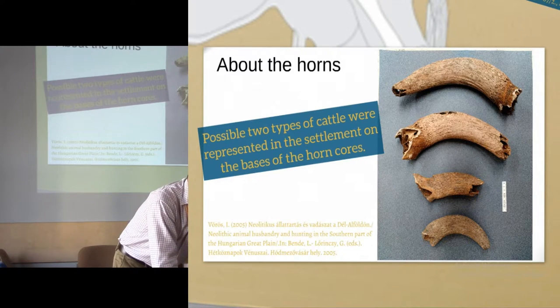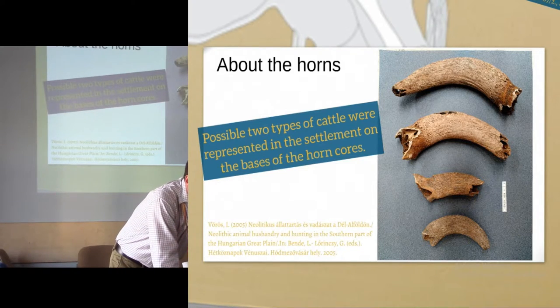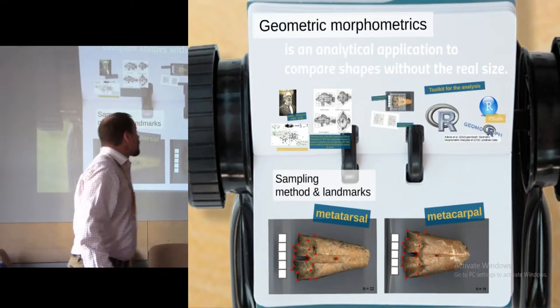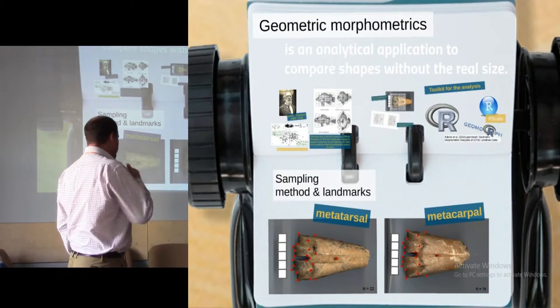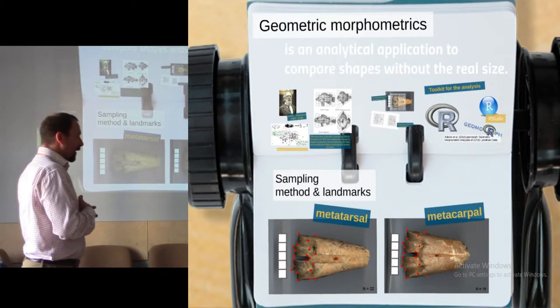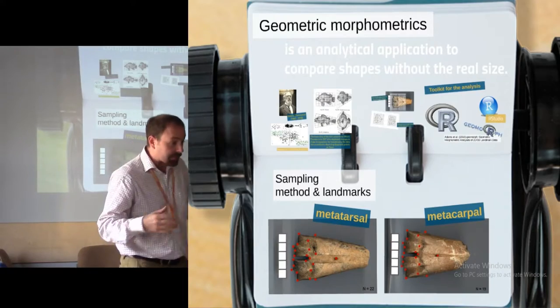But what we can do with this extremely fragmented information? The possible answer is geometric morphometrics. Geometric morphometrics is an analytical application to compare shapes without absolute sizes.